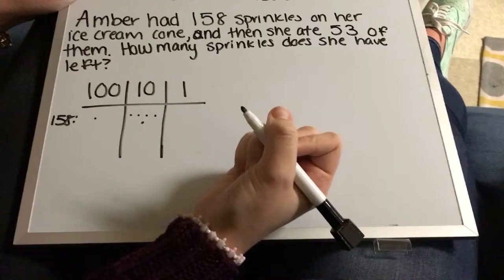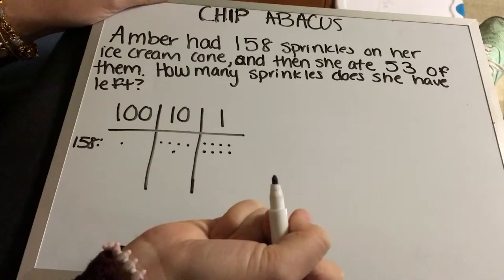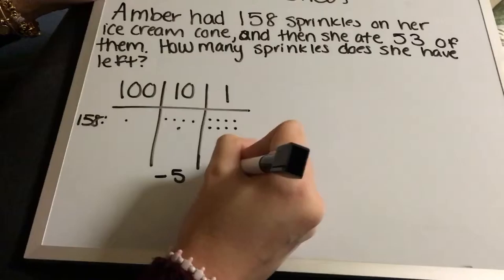We're going to do for 158, so 100 and 1, 2, 3, 4, 5 to show the 50, and then 1, 2, 3, 4, 5, 6, 7, 8 to show the 8.